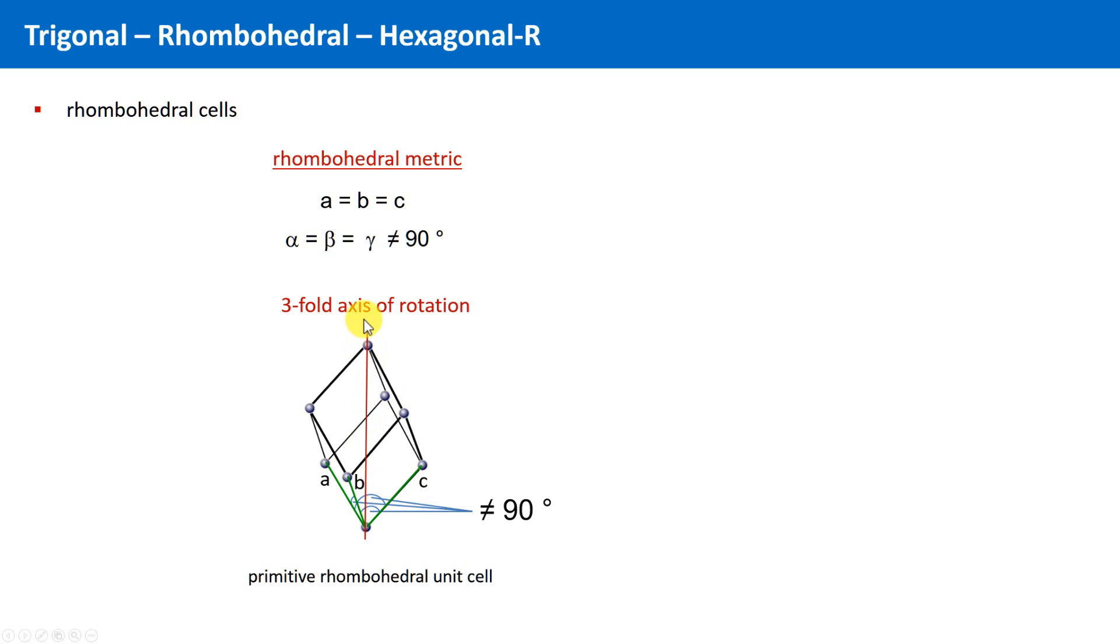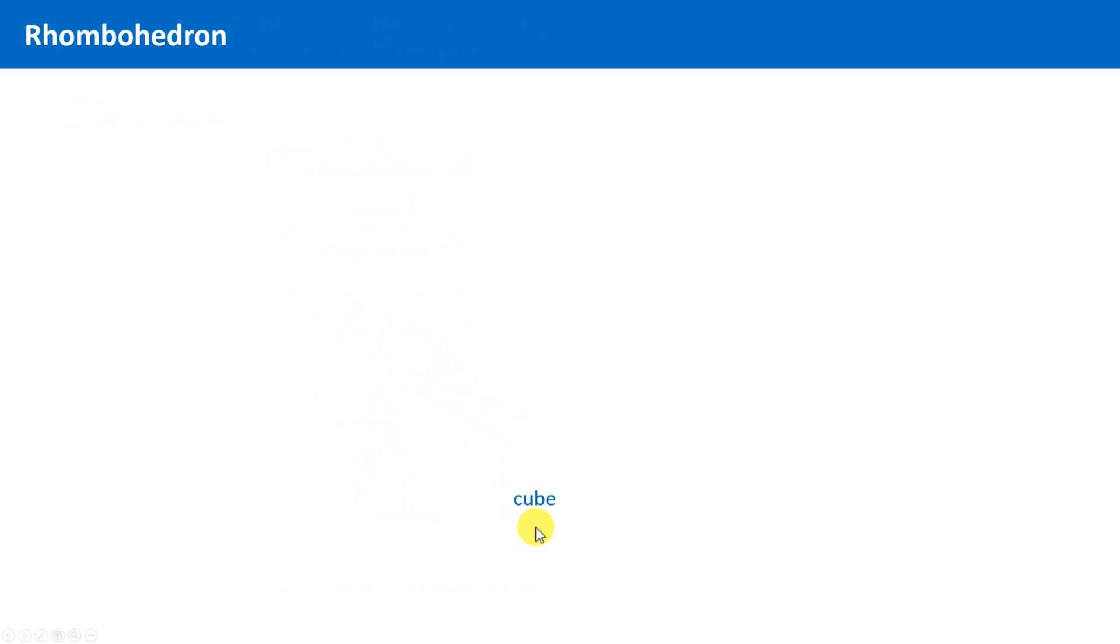A rhombohedron can be derived from a cube, which is a special case of a rhombohedron in which the angles are indeed 90 degrees. If we stand a cube on one of its corners in this way, and if we now compress or stretch this cube along this diagonal, then we get a rhombohedron.